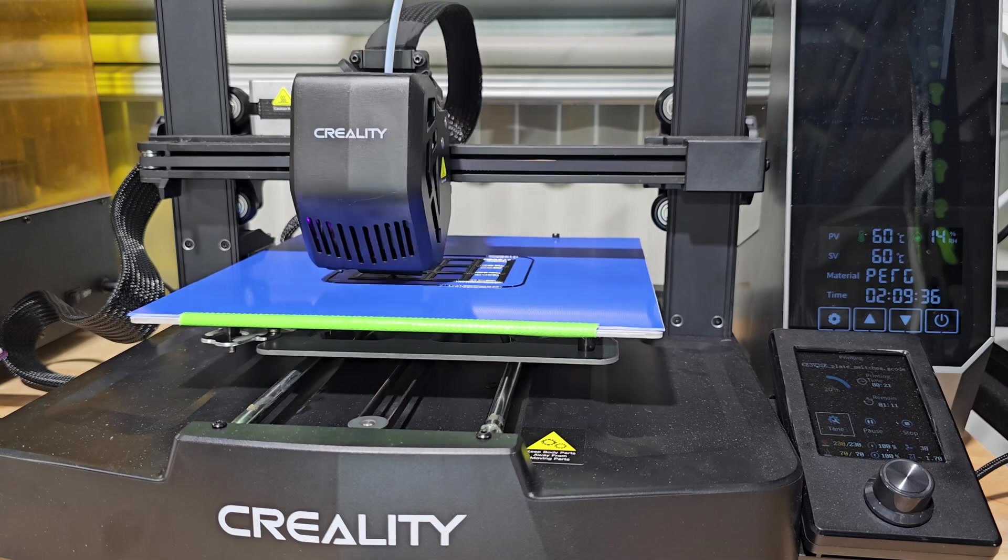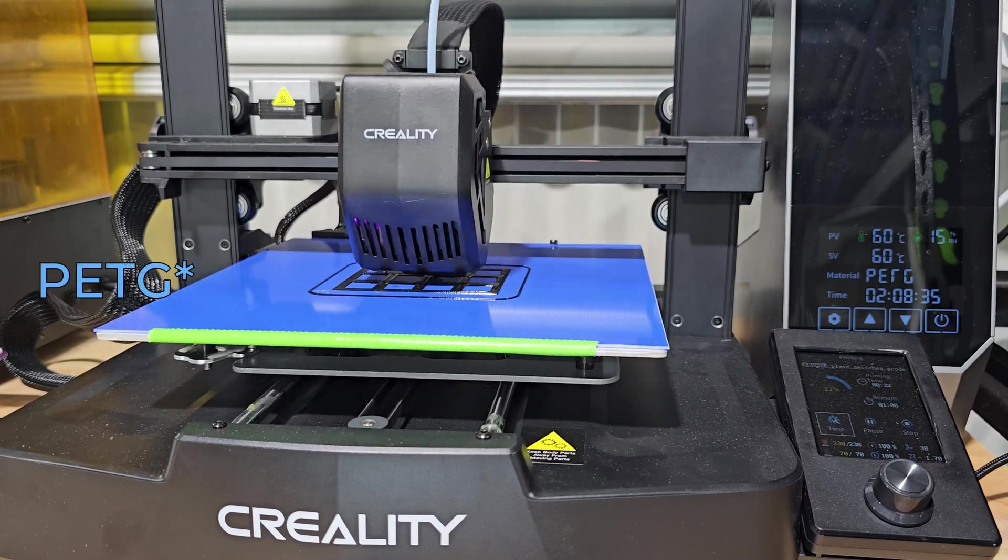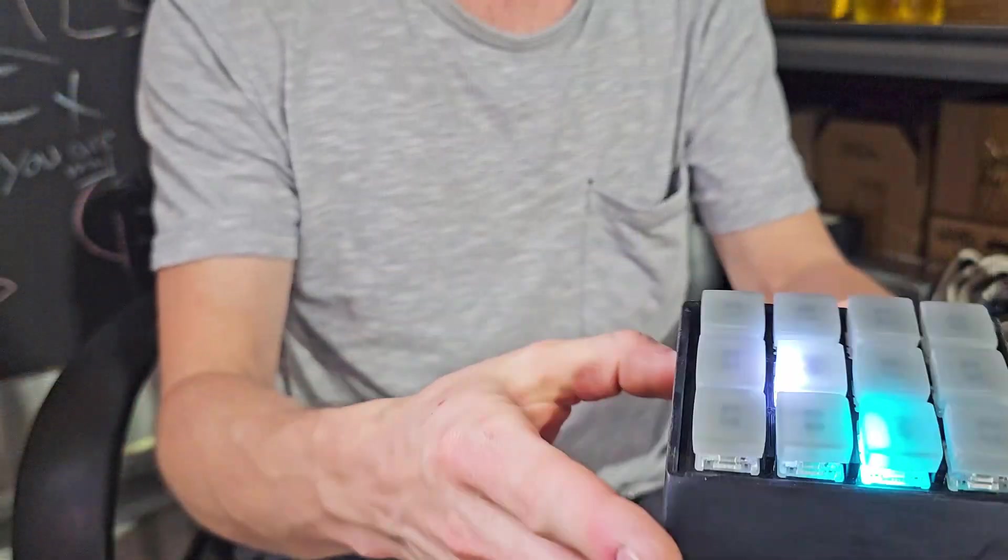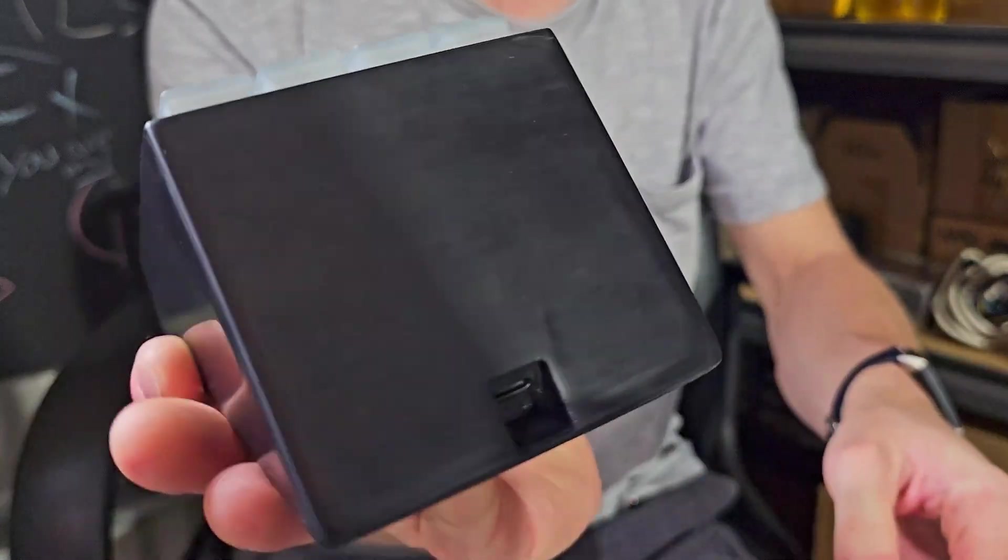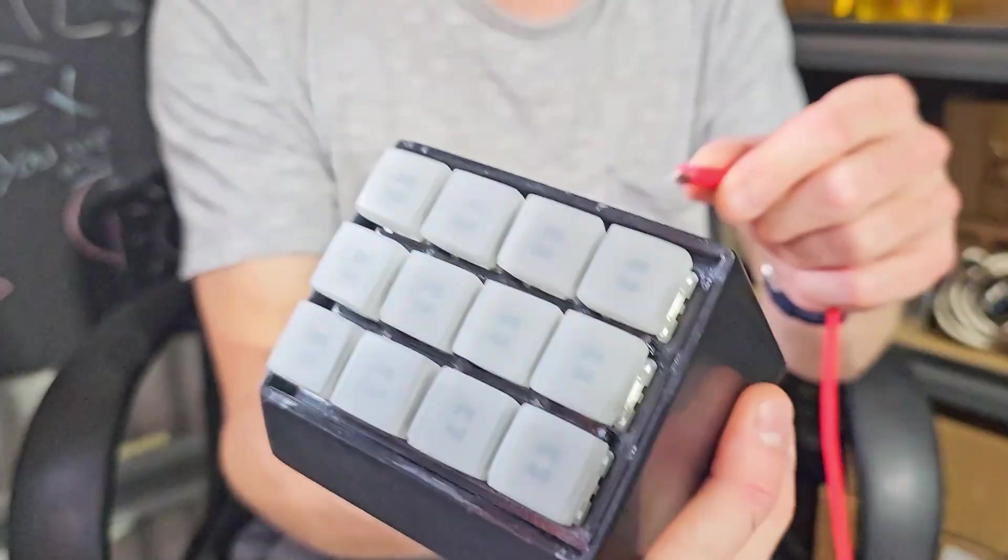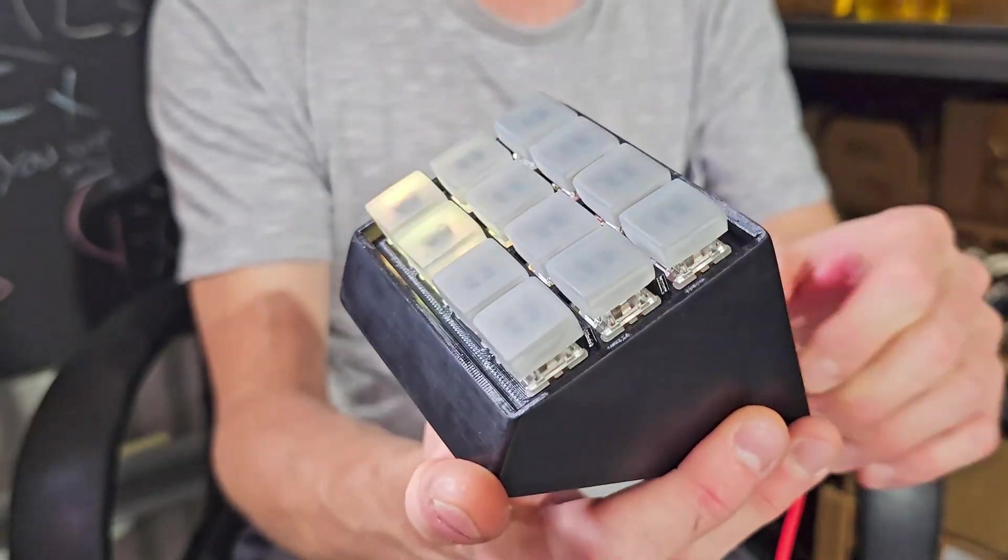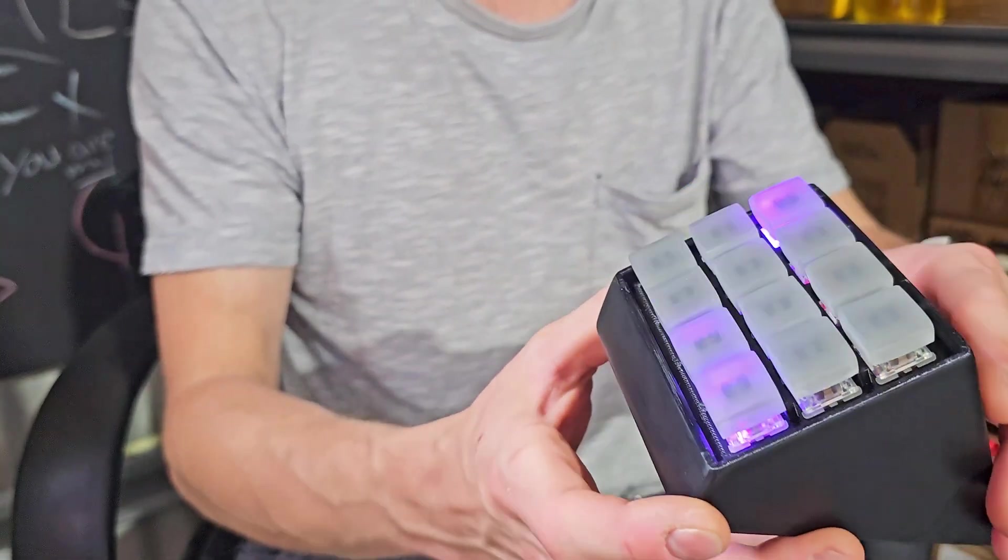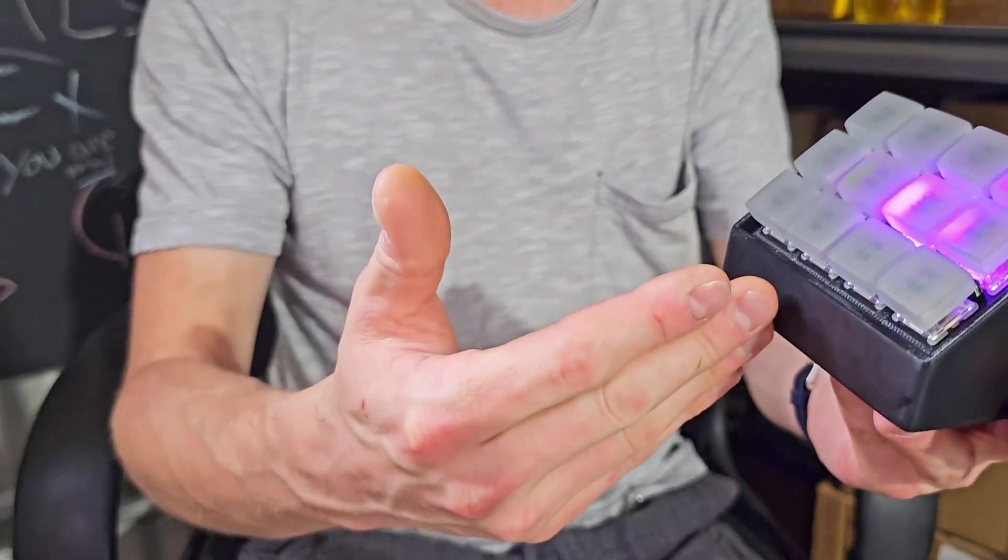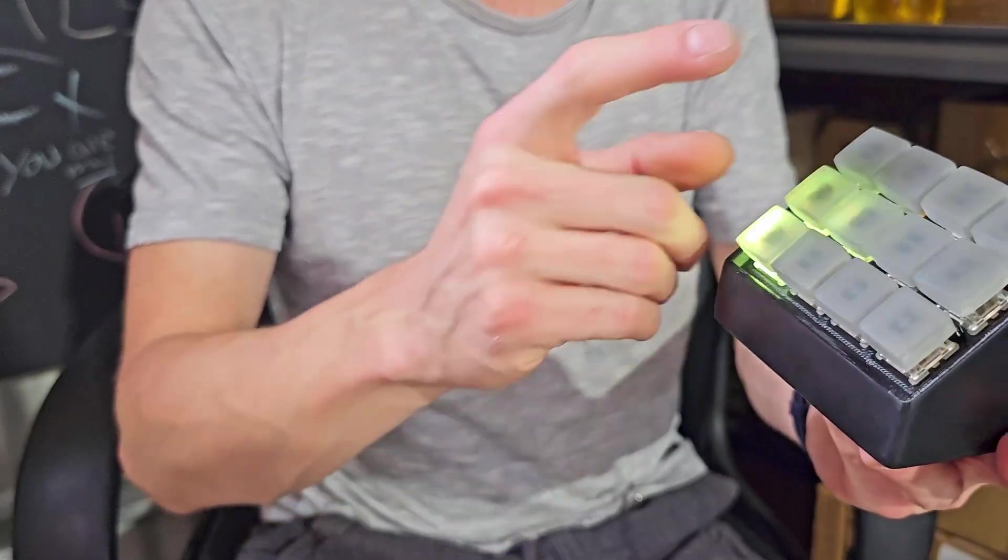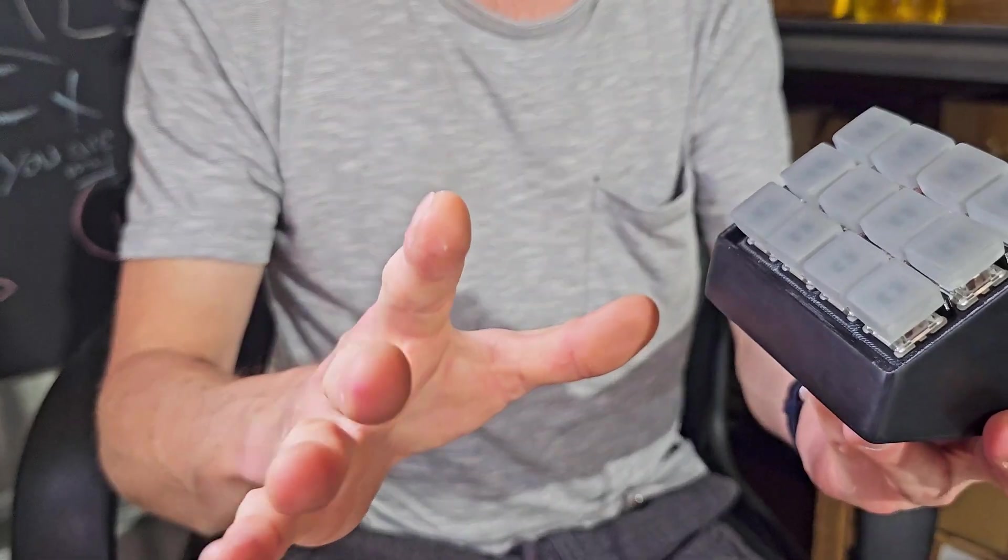FDM printed this external enclosure and that's in PLA which I then just sanded and polished to a really nice finish. So the finished product has its little USB port on the back and you plug it in very carefully because that connector is just hot glued in there at the moment.